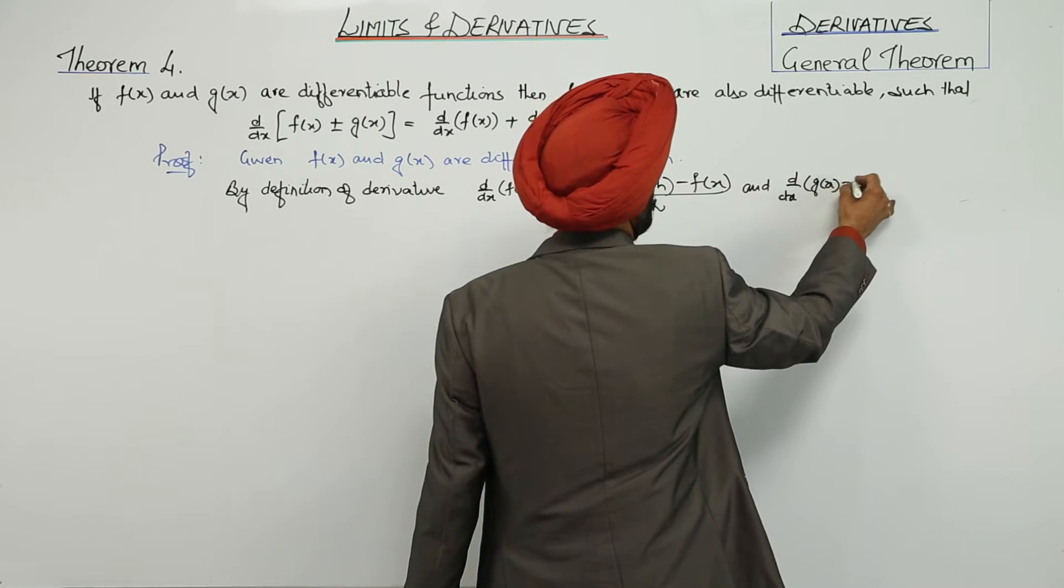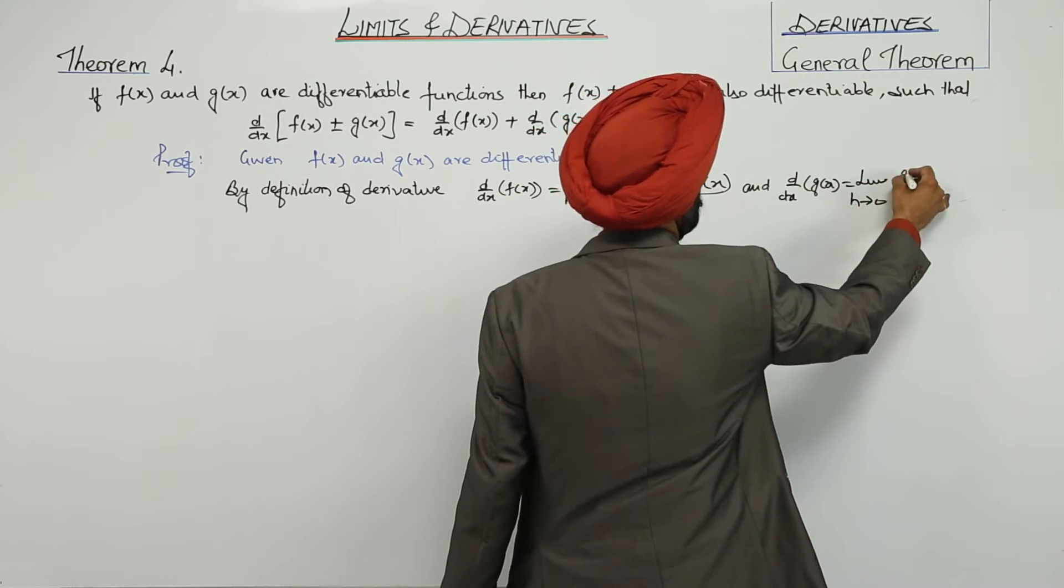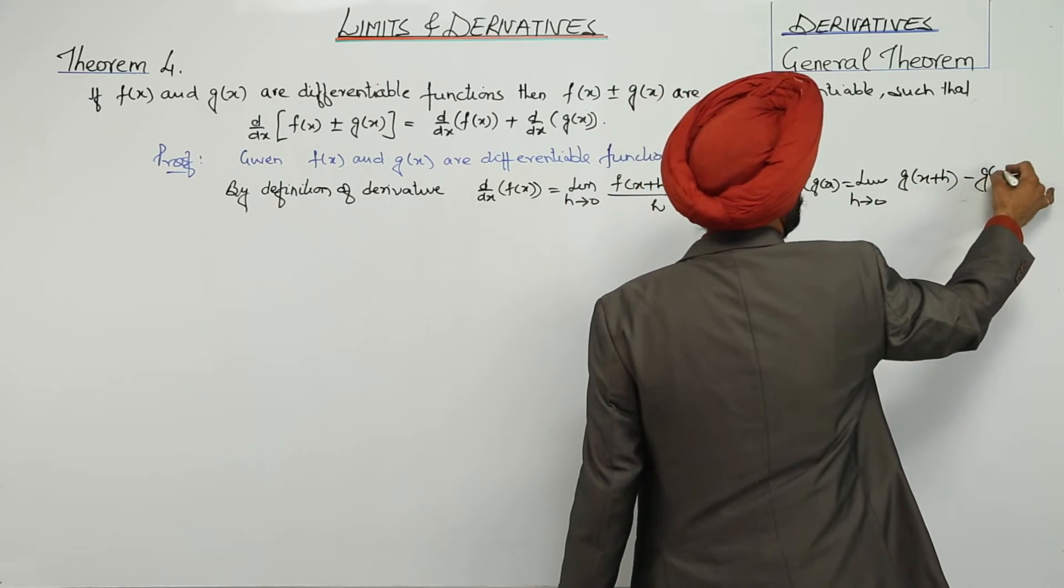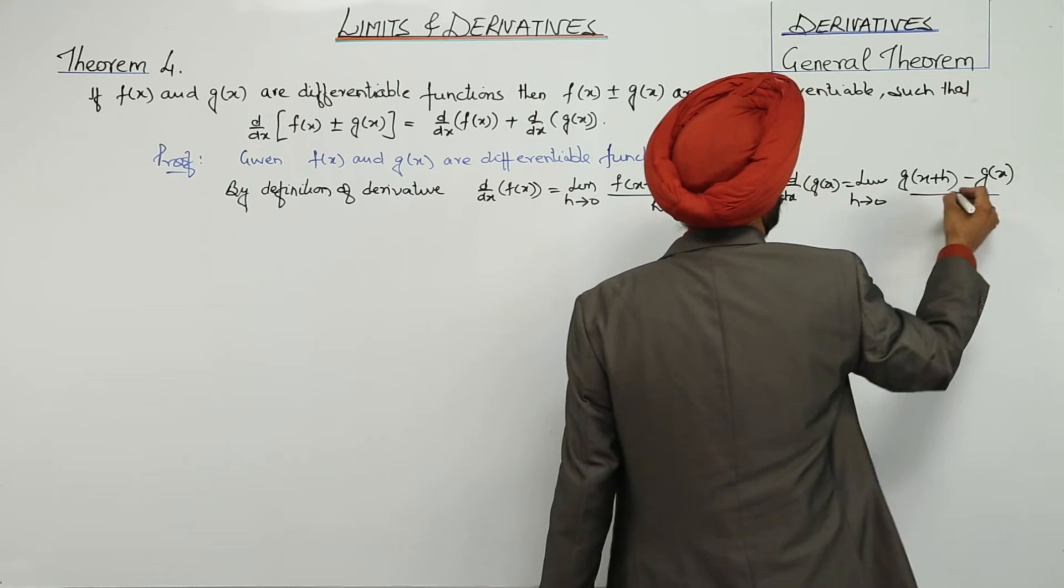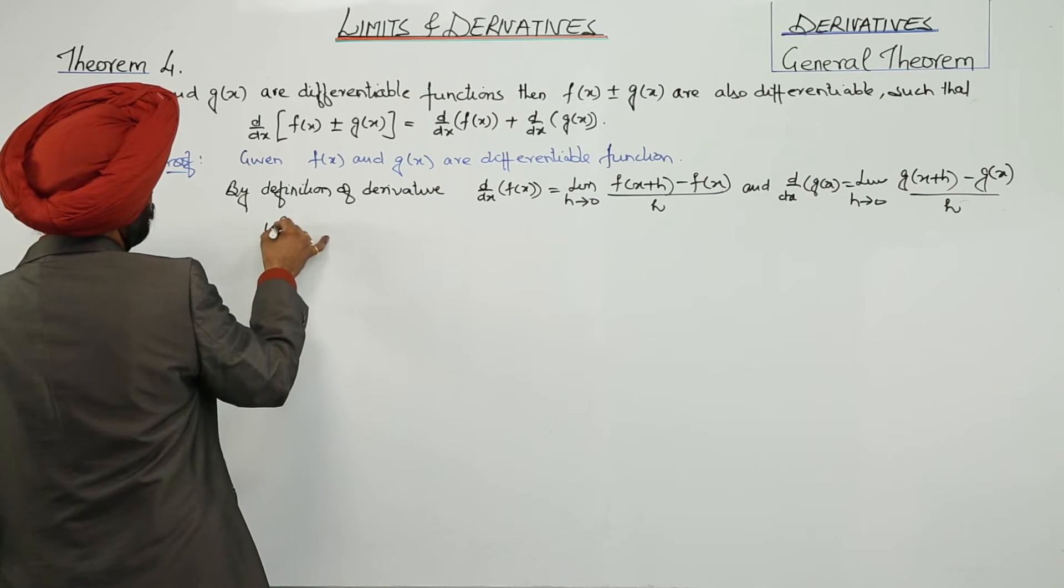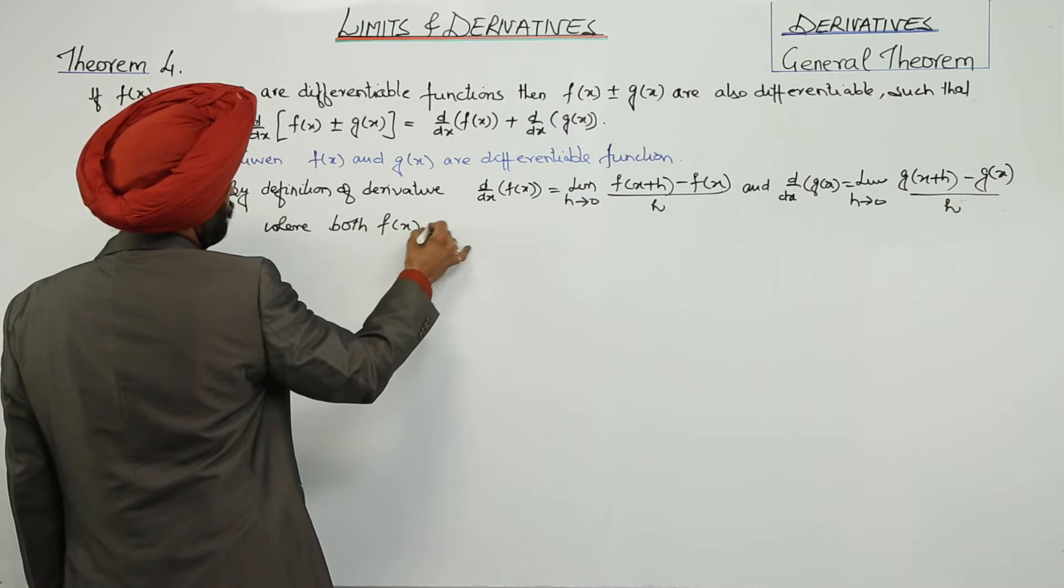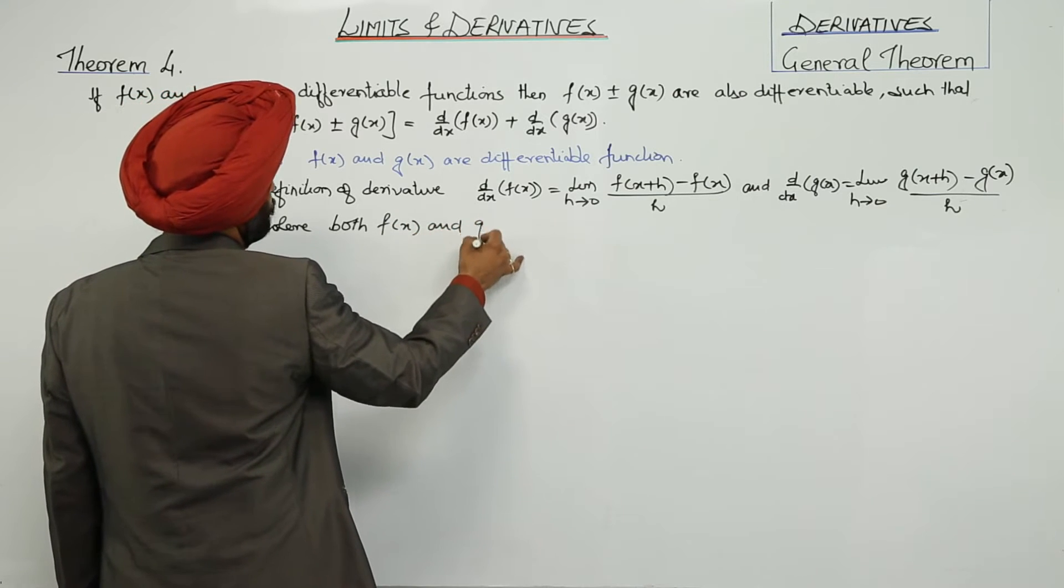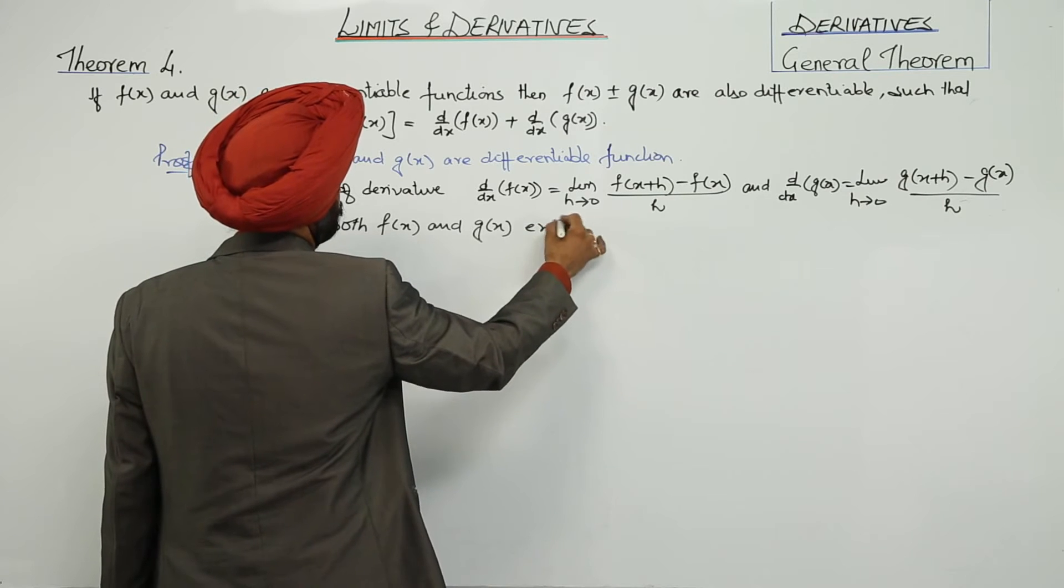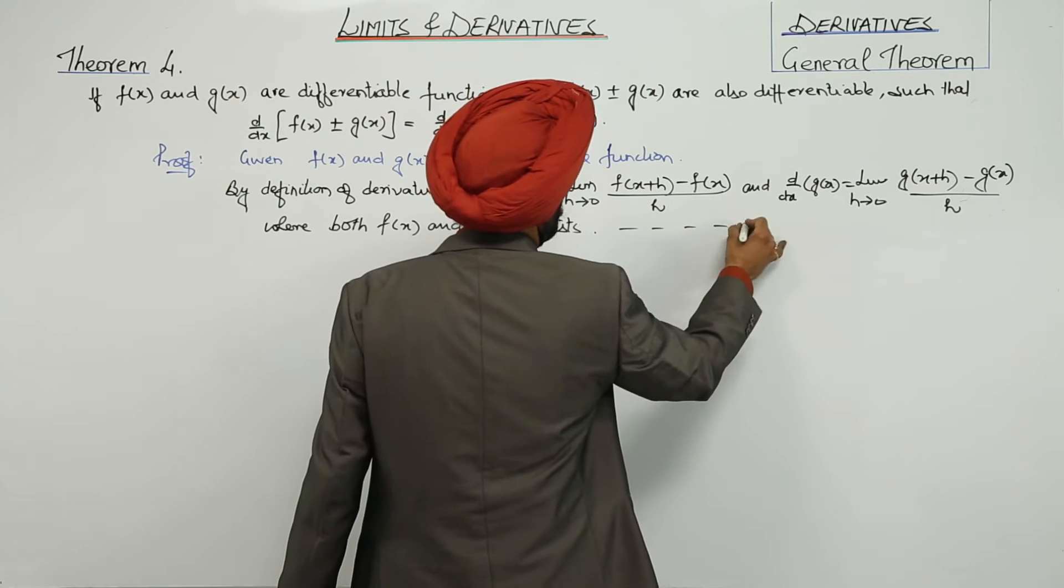And d/dx of g(x) equals the limit as h approaches 0 of [g(x+h) - g(x)]/h, where both f'(x) and g'(x) exist. Let this be equation 1.